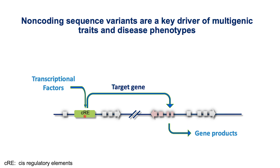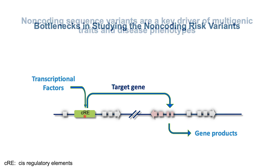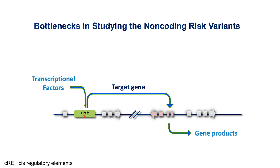You might ask: how can all of these sequence variants affect human phenotypes if they don't disrupt protein-coding genes? One prevalent hypothesis is that many non-coding risk variants contribute to human trait and disease phenotypes by perturbing the activity of transcriptional regulatory sequences in the human genome. Transcriptional regulatory sequences, commonly referred to as cis-regulatory elements, dictate the expression patterns of target genes by recruiting sequence-specific transcription factors and localizing to target genes on the same strand of DNA to modify the level of their expression. Testing this hypothesis, however, is still limited by several major bottlenecks.